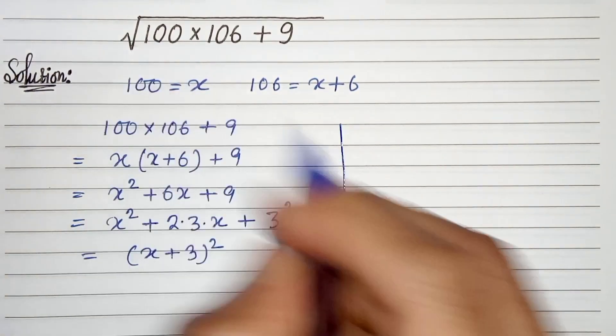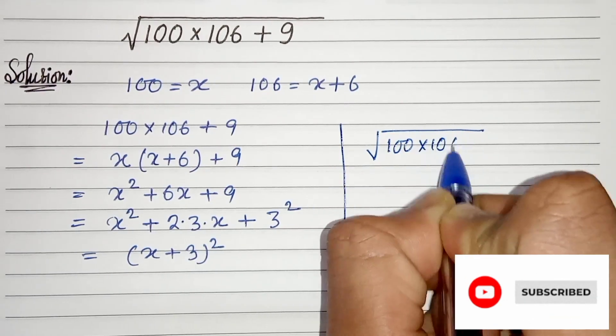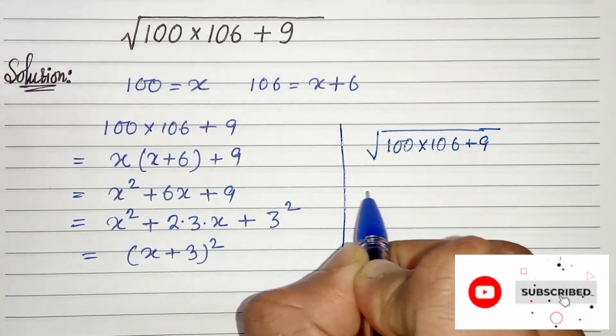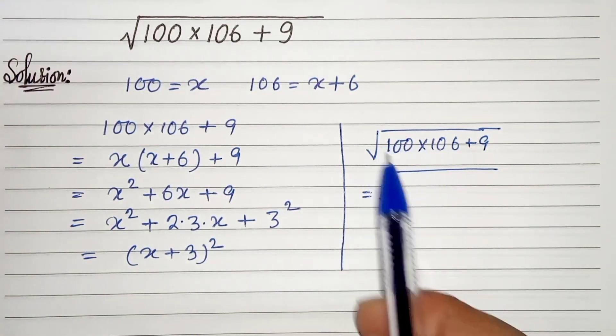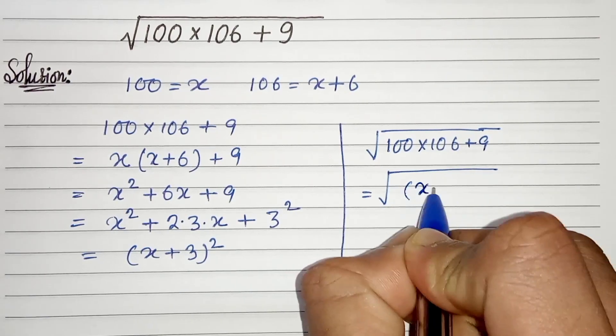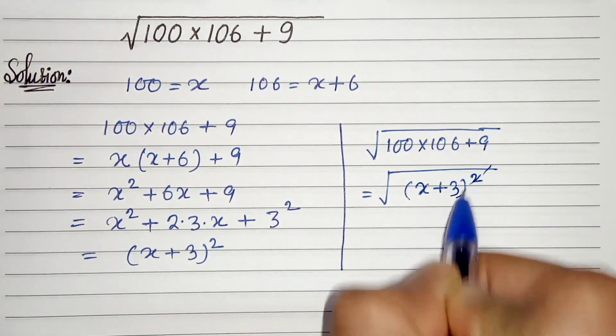But we are given the square root of 100 times 106 plus 9. So from this we can write, we get this term as (x plus 3) whole square. Now we can cancel out root and square.